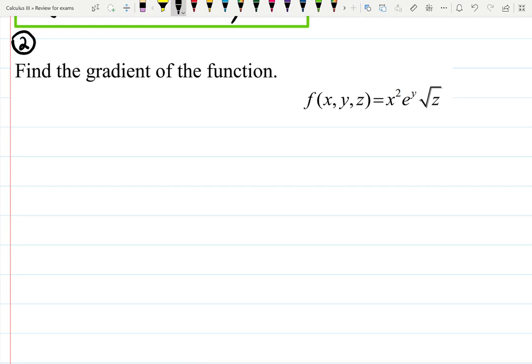Again, you want to find all partial derivatives and collect them into one vector. So, we want to have partial derivative with respect to x, partial derivative with respect to y, and in this case, with respect to z as well. So that should be fun.